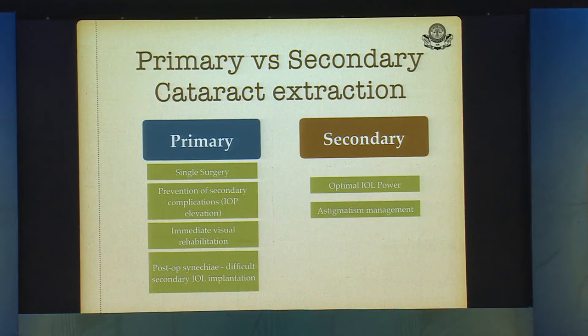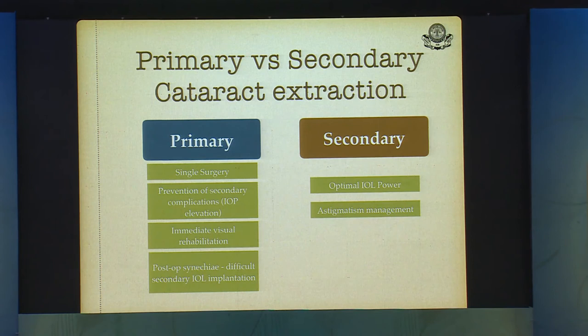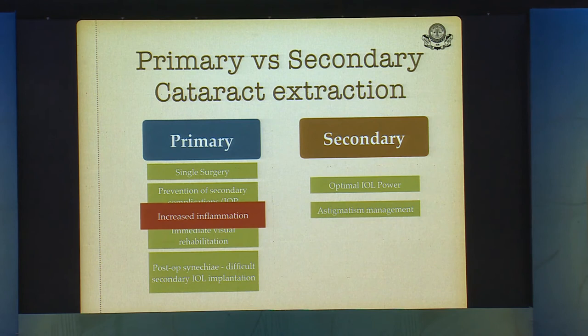Coming to IOL implantation — primary and secondary cataract extraction. Primary is generally a single surgery that helps prevent secondary complications, mainly glaucoma, and gives immediate visual rehabilitation. Secondary cataract surgery has the advantage of allowing optimal IOL power calculation, management of astigmatism, and placement of toric IOLs.